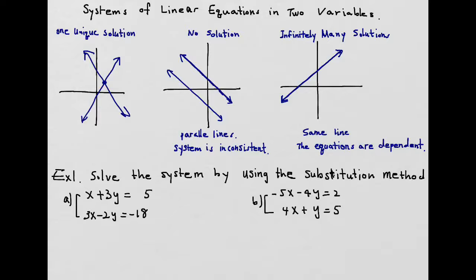Or if those two lines are parallel — when do we have parallel lines? When we have the same slope. So if those two equations have the same slope, you're going to have parallel lines. Then we call this no solutions — parallel lines, and the system is inconsistent.